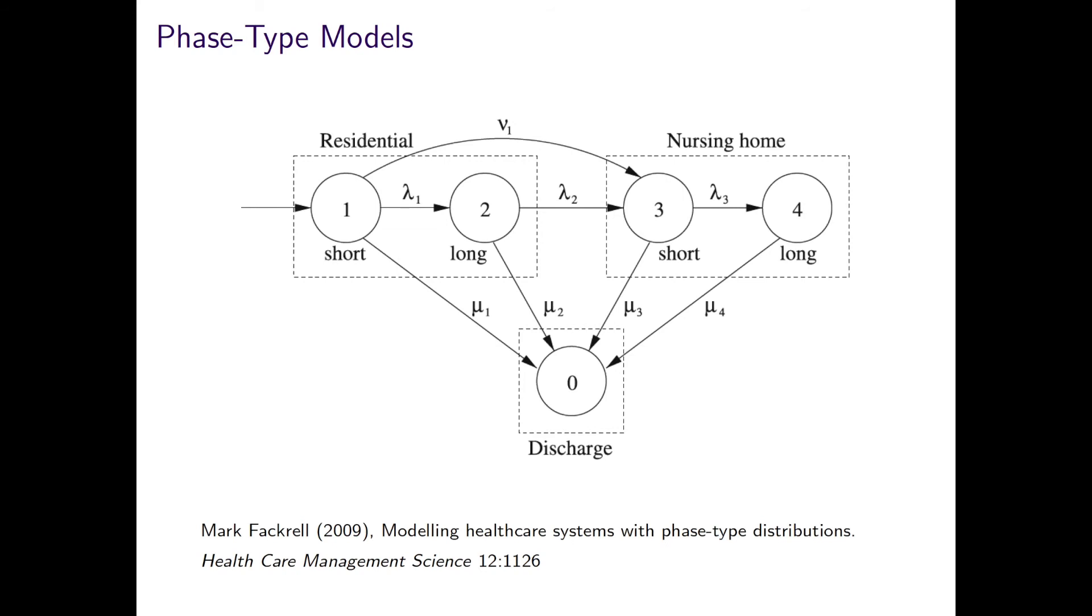I took this diagram from a very nice paper by Mark Fackrell. It shows how data from residential and nursing homes can be captured with a two-phase model. Broadly speaking, those with a short length of stay and those with long stays. This is a useful classifier, and the states can then be used in the Markov chain model as shown to model the flow of elderly patients in the care system and examine resource needs.